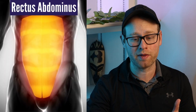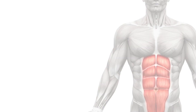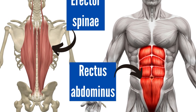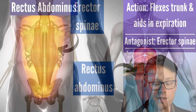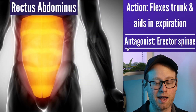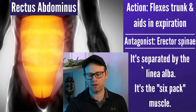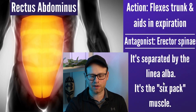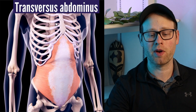The muscles that most oppose what the rectus abdominis does are the erector spinae muscles. The erector spinae muscles are on the opposite side of the body compared to the rectus abdominis, which is very typical for an agonist and antagonist. It's also separated by the linea alba — this line that goes right down the middle — that is called your linea alba.